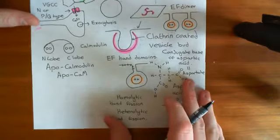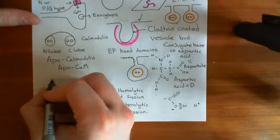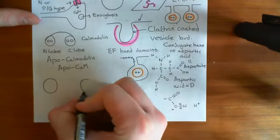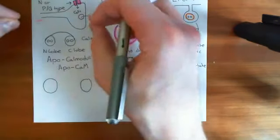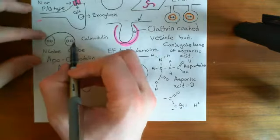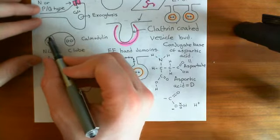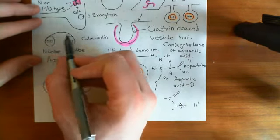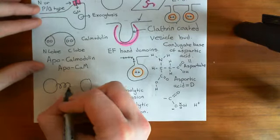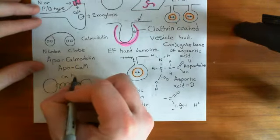When four calcium ions bind to the apocalmodulin, the apocalmodulin changes its structure. Firstly, it becomes less hunched-over — these two lobes move outwards apart from one another. And in contrast to the whole molecule straightening out, the polypeptide linker between the two lobes, which was initially a linear polypeptide, now becomes alpha helical.